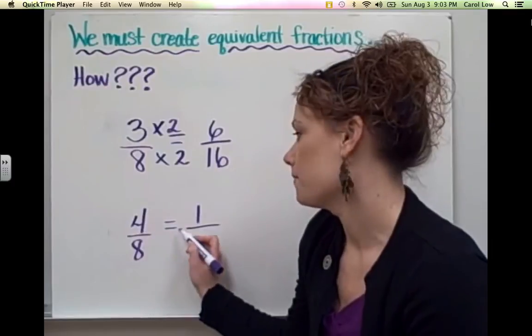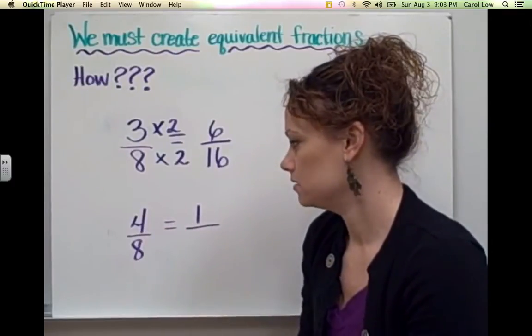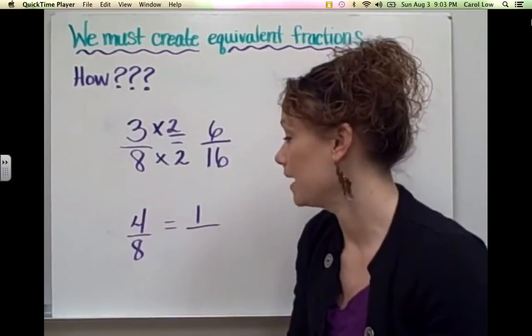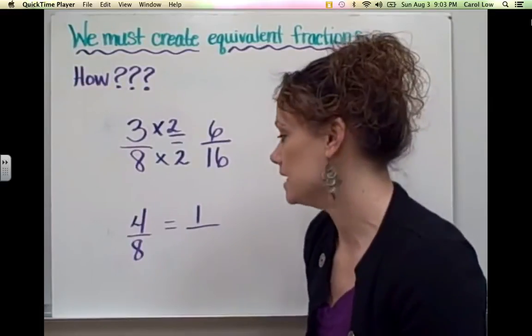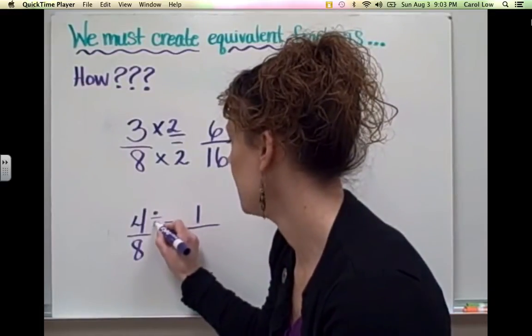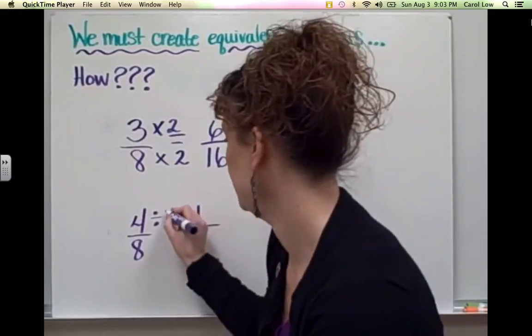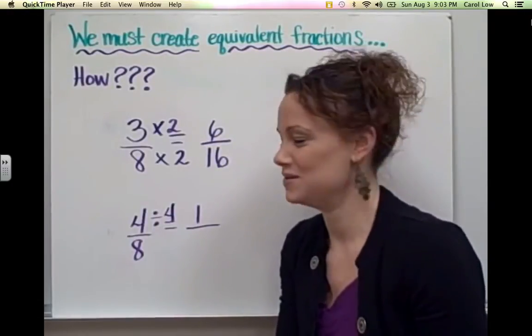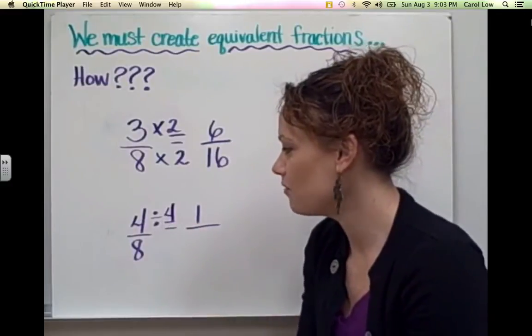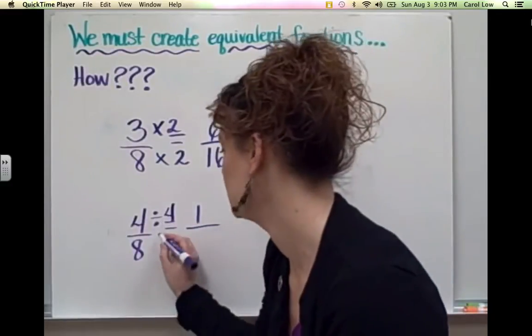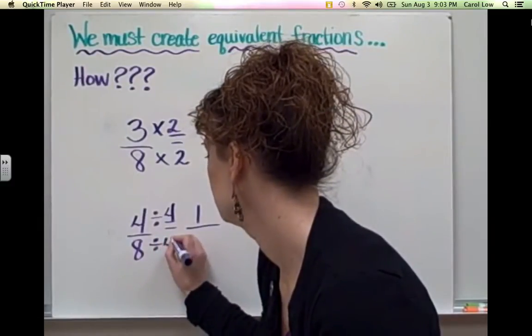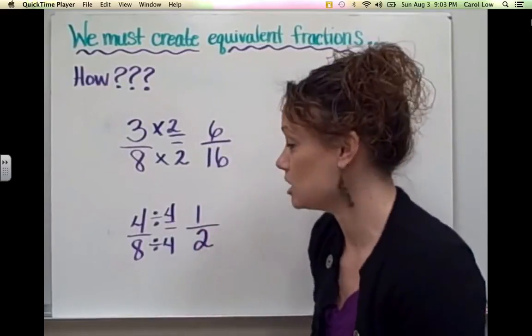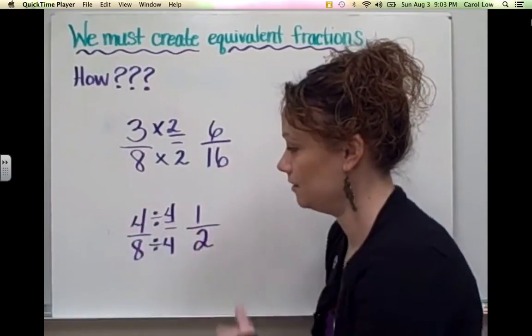My first numerator is 4. My 4 then becomes a 1. So what must you do to 4 to make it 1? And if you notice, we're going down. So that tells us we need to divide. So 4 divided by what will give you 1? 4 divided by 4 equals 1. And as the rule stated before, whatever you do to one number, you must do to the other. So if we divide the numerator by 4, we must divide the denominator by 4 as well. And 8 divided by 4 equals 2. So I've now created an equivalent fraction that shows 4 eighths is equivalent to 1 half.